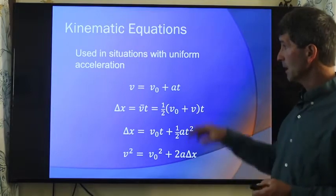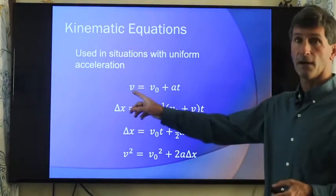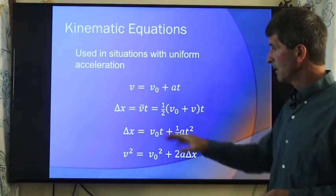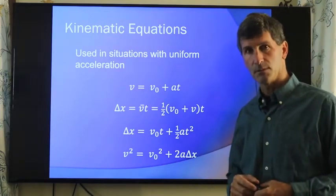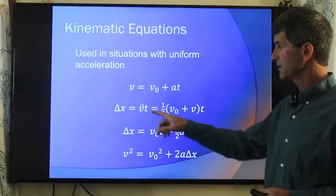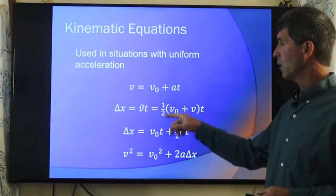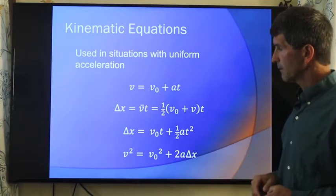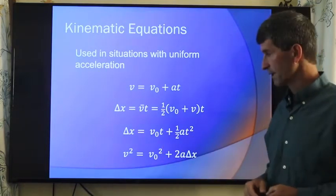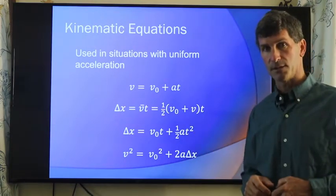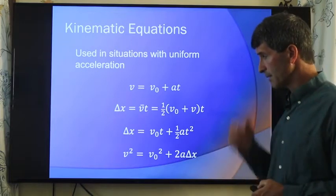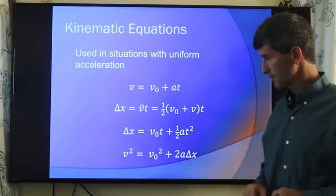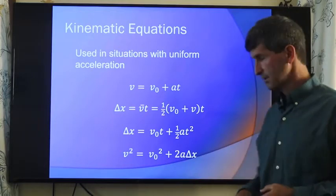These are the four equations. The first one says that the final velocity equals the initial velocity plus acceleration times time. That's fairly straightforward. The next one says our position change, our displacement, is equal to the average velocity times time or one-half the initial velocity plus the final velocity times time. Third equation: displacement is equal to v₀ times t, the initial velocity times time, plus one-half the acceleration times time squared. The last one, which is probably the most difficult to understand where it came from, is the final velocity squared equals the initial velocity squared plus twice the acceleration times the change in position.